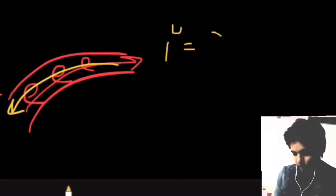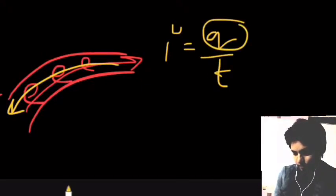Suppose this is a conductor. In this conductor, free electrons will move in one direction because of potential difference, and the effect of this movement is the current in the opposite direction. The current formula is I equal to rate of flow of charge with respect to time.